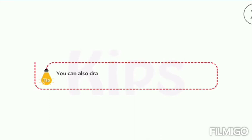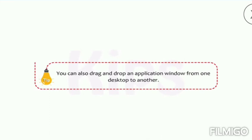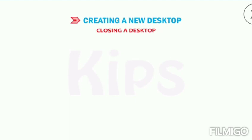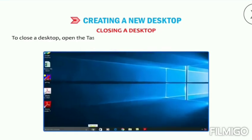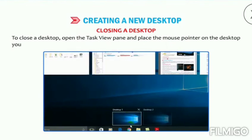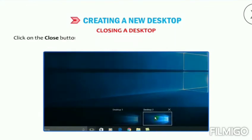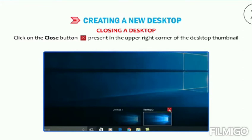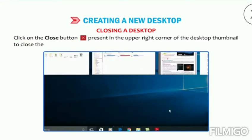You can also drag and drop an application window from one desktop to another. To close a desktop, open the Task View pane and place the mouse pointer on the desktop you want to close. Click on the close button present in the upper right corner of the desktop thumbnail to close the desktop.